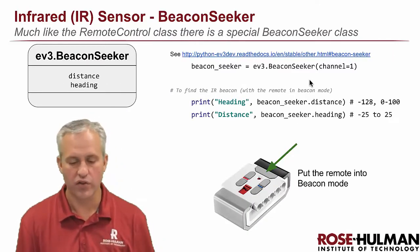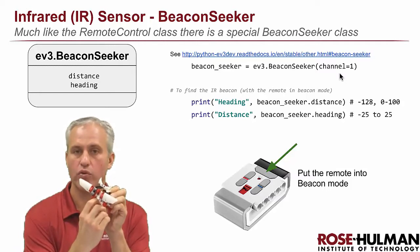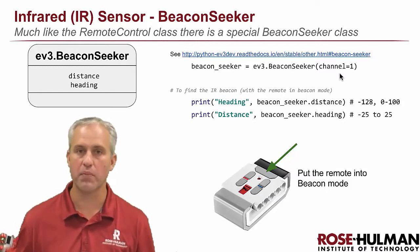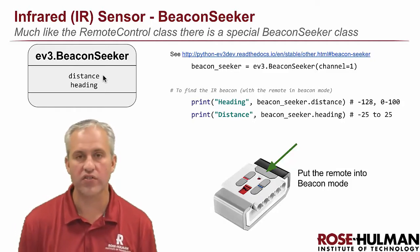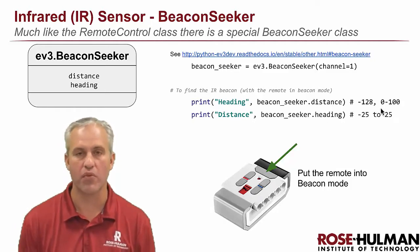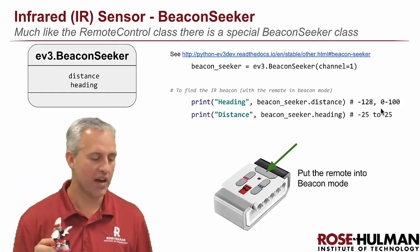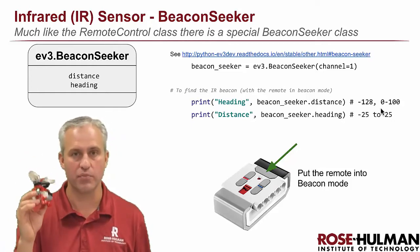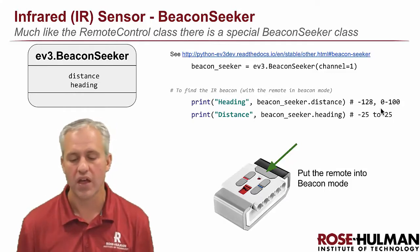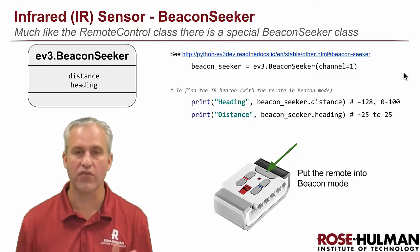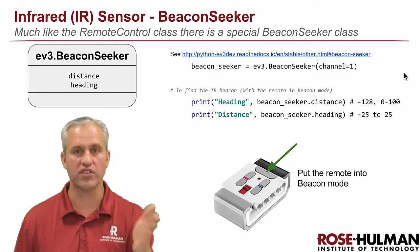Beacon Seeker needs a parameter — what channel are you on, similar to the IR remote. You can decide to seek channel one, two, three, or four. This is nice because if people around you are on channel one, you can switch to channel two. The Beacon Seeker has two instance variables. Distance is a number from zero to 100, and it works like proximity but better, because it's an active beacon so it can determine distance much more accurately than just reflecting off a wall. If it doesn't see anything, it gives the special value of negative 128, meaning it sees nothing.